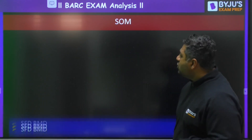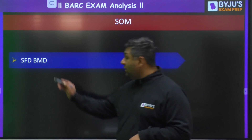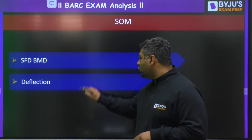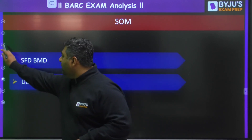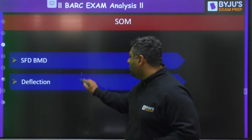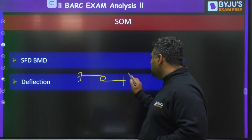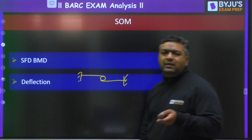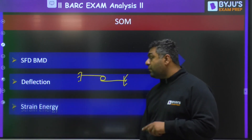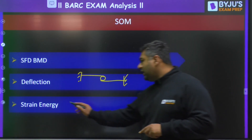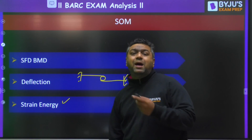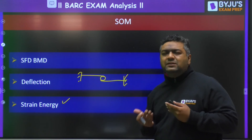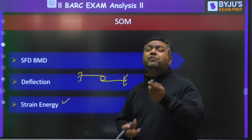From Strength of Materials, questions were there from SFD-BMD and deflection. The deflection question was of the type we have done many times in class — where two beams are connected together. For SFD-BMD, a cantilever with different loadings was given and they asked about SFD-BMD. From strain energy, the question was from the bars part — they gave a composite non-prismatic bar and asked the strain energy using the formula: half into P into delta.